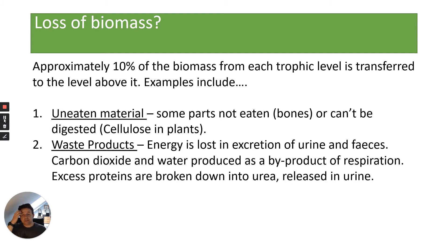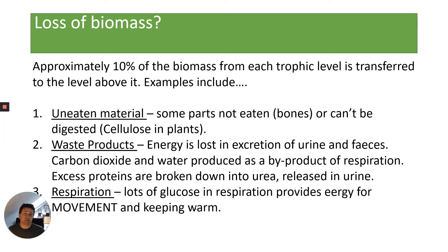Secondly, waste products such as urine and faeces: energy is lost in excretion, and carbon dioxide and water are produced as a byproduct of respiration. Excess proteins are broken down into urea, which is poisonous and needs to be released in urine. All those waste products contain energy. Thirdly, respiration: glucose used in respiration provides energy for movement and keeping warm. Some of the energy is used by the animal not to produce biomass but for moving around and to maintain body temperature, particularly in warm-blooded animals.